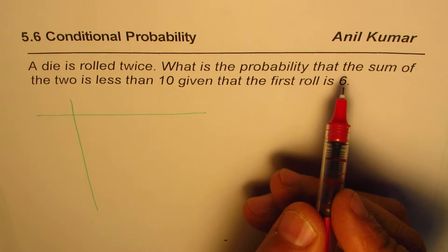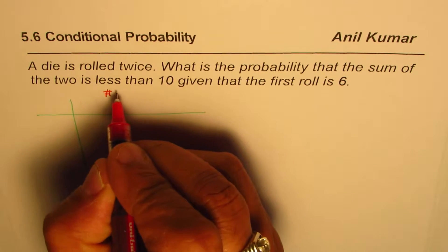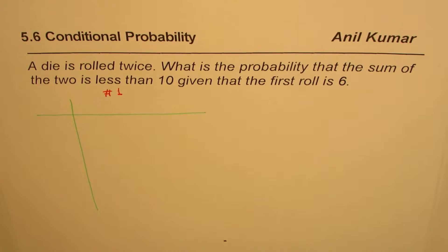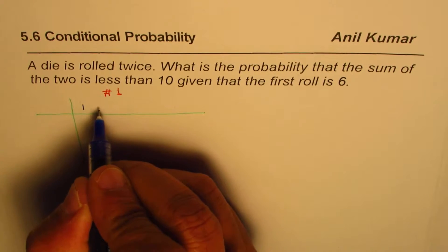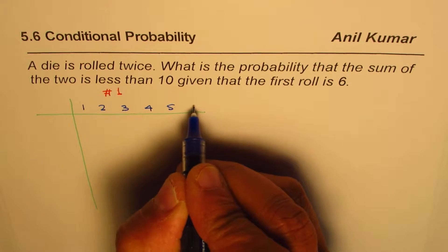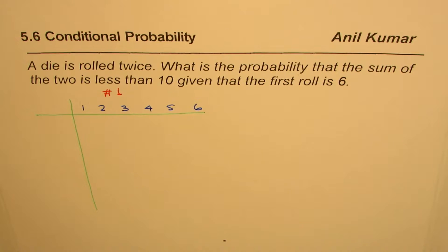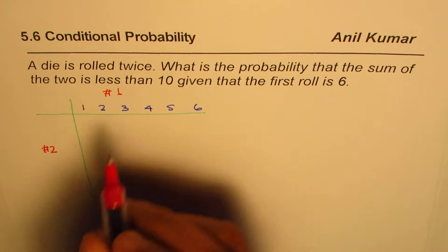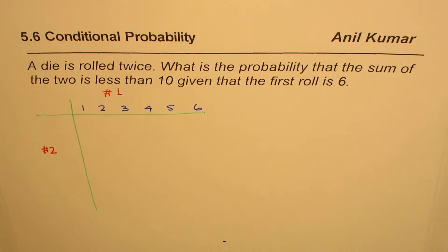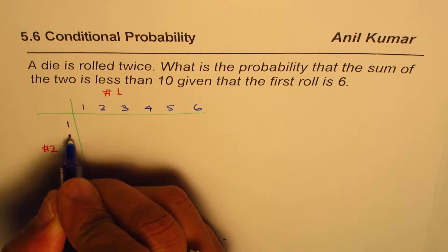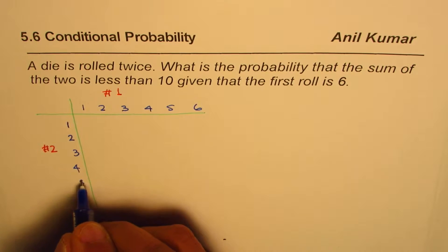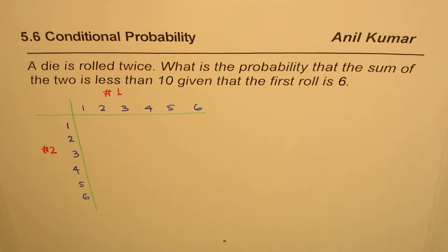We are given the first roll outcome. So let me label this as die number one — the options, as you know, are 1, 2, 3, 4, 5, or 6. When we roll it a second time, even then we have one of the six options: 1, 2, 3, 4, 5, 6. As I share the solution, I'm also sharing my thought process and the approach you can adopt in solving such questions.